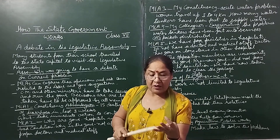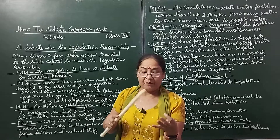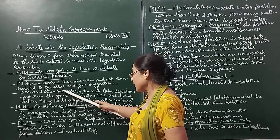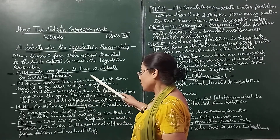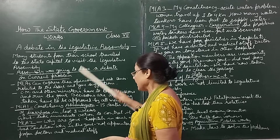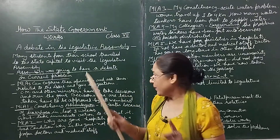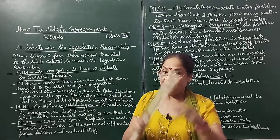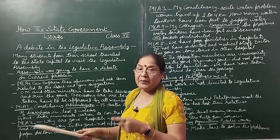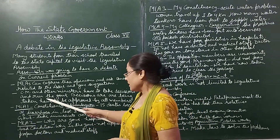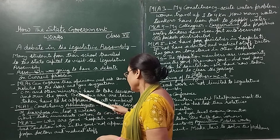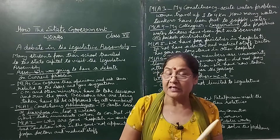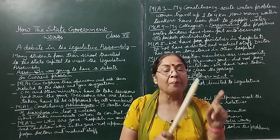Suppose they are having a health problem — an epidemic is very bad and there are no doctors. So they will raise this question with the Health Minister. MLAs can give suggestions, express opinions, and ask questions to the concerned minister. The CM and other ministers take decisions, make laws for the state, and run the government. Decisions have to be approved by all the legislative members.